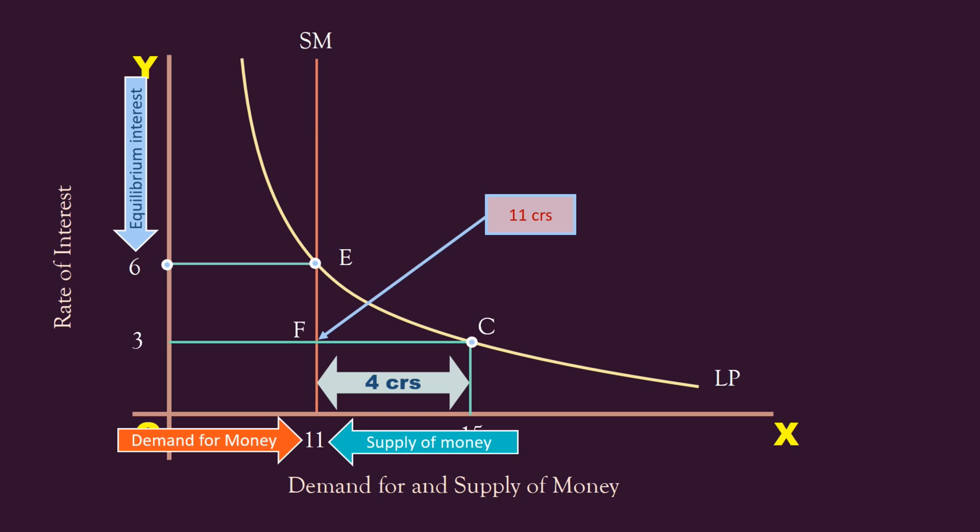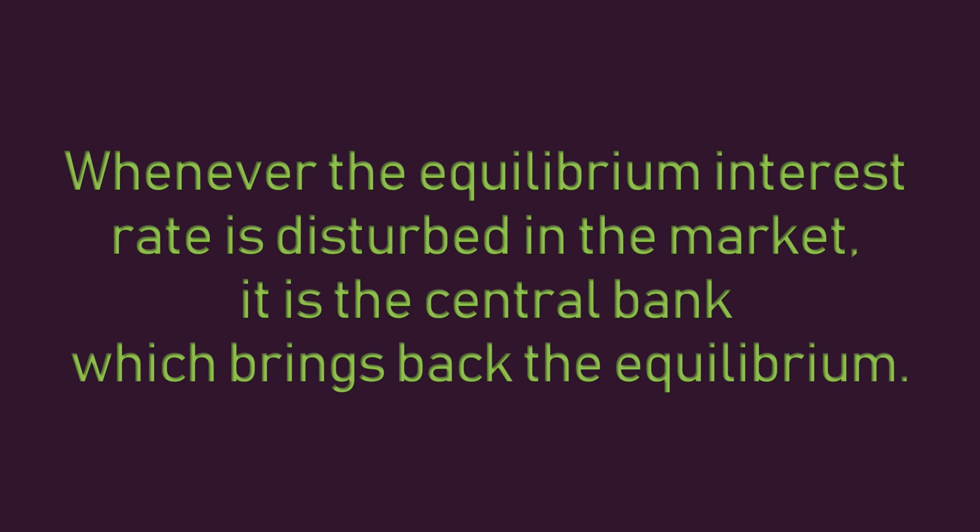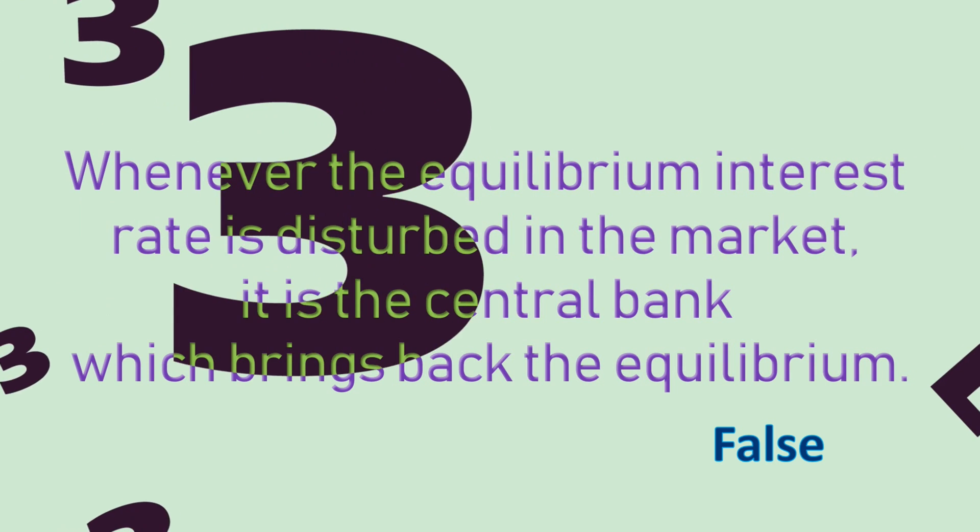Once again the equilibrium interest rate of six percent prevails in the economy. This is how the equilibrium interest rate is determined by the demand for and supply of money. So long as demand and supply conditions remain constant, market forces take care of any disturbance and restore the original equilibrium. In the next video we shall analyze how shifts in demand and supply curves affect the equilibrium rate of interest. True or false: whenever the equilibrium interest rate is disturbed, it is the central bank that brings back equilibrium. The answer is false — it is the market forces.